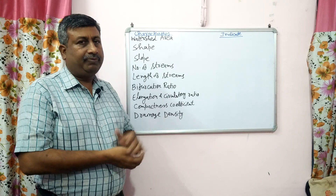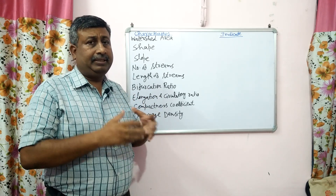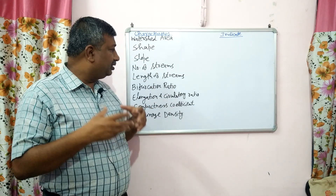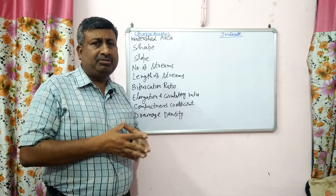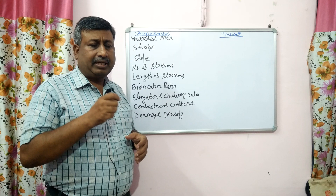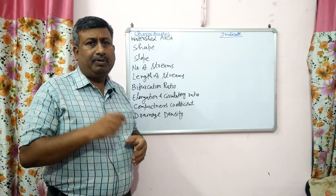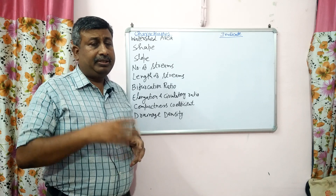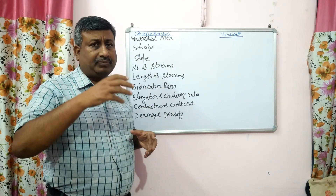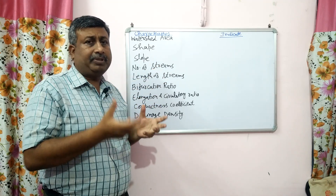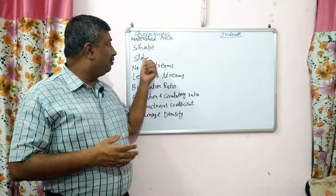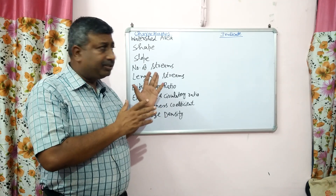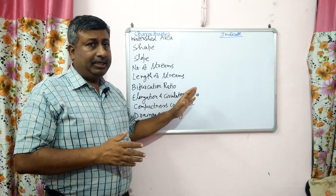In this lecture, I will tell you about what are the important characteristics and how these characters indicate what they actually indicate. There are indicators like watershed area, shape, slope, stream length, number of streams, and bifurcation ratio. Details of these characteristics are already uploaded in the playlist on watershed, and you can watch those lectures. This lecture focuses on what these characteristics indicate and what information we can get from them.